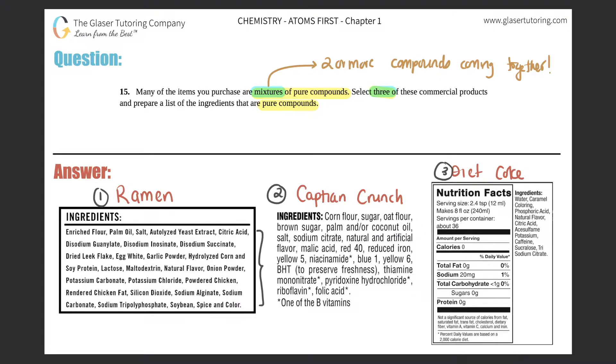As I go from left to right, we got enriched flour, palm oil, salt. That would be one of them. I know that salt is NaCl. That's a compound. Compounds are pure substances, so there's one of them.